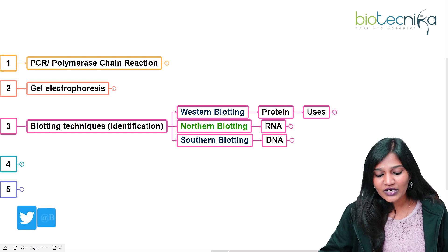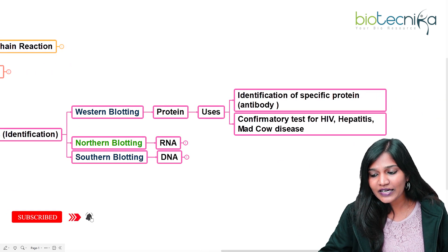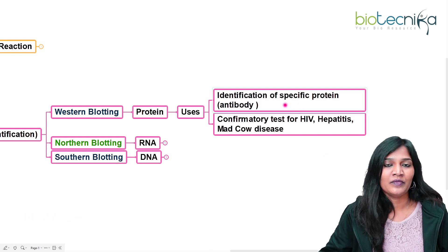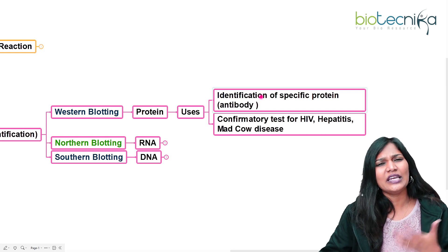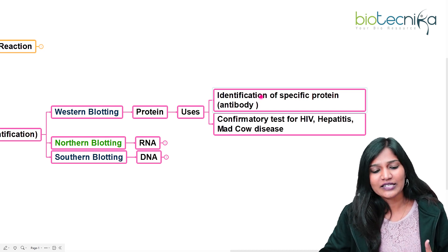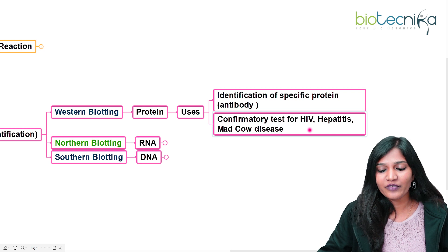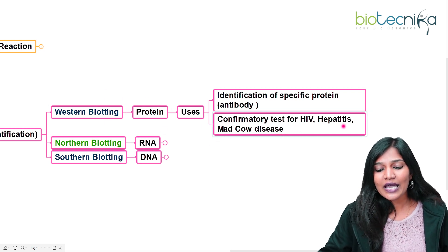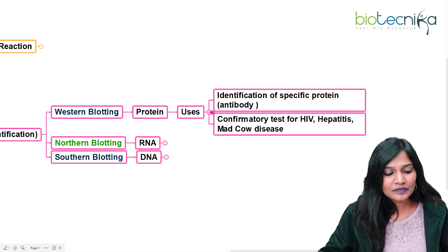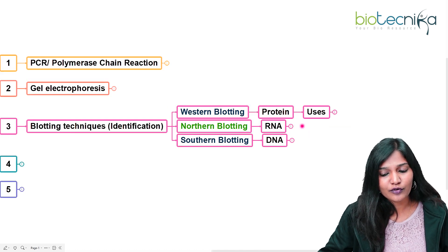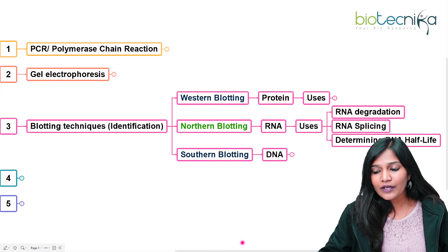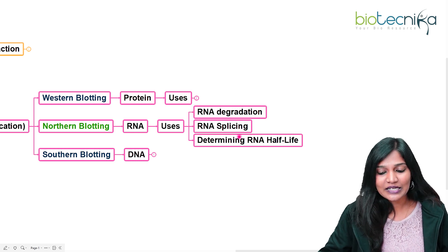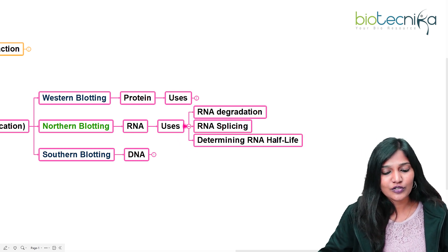For western blotting, since it involves proteins, antibodies play a major role. It is used to identify a specific protein — whether an antibody, an antigen, or any kind of protein. Western blotting is used as a confirmatory test for HIV, hepatitis, and mad cow disease. Northern blotting is for RNA, and its uses include identifying RNA, RNA degradation, RNA splicing, and determining RNA half-life.